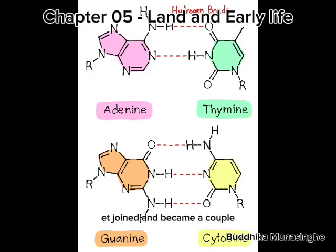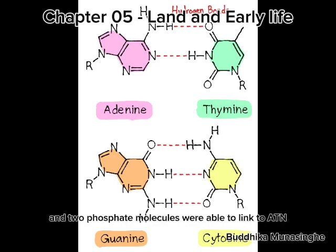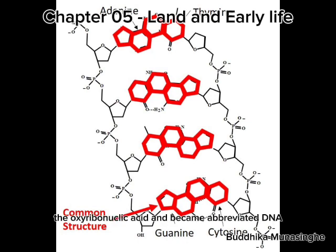AT joined and became a couple, and GC joined and became another couple. AT and GC were connected to each other through hydrogen bonds. Sugar molecules and phosphate molecules were able to link two AT and GC molecules together. This chemical was identified as deoxyribonucleic acid, abbreviated as DNA.